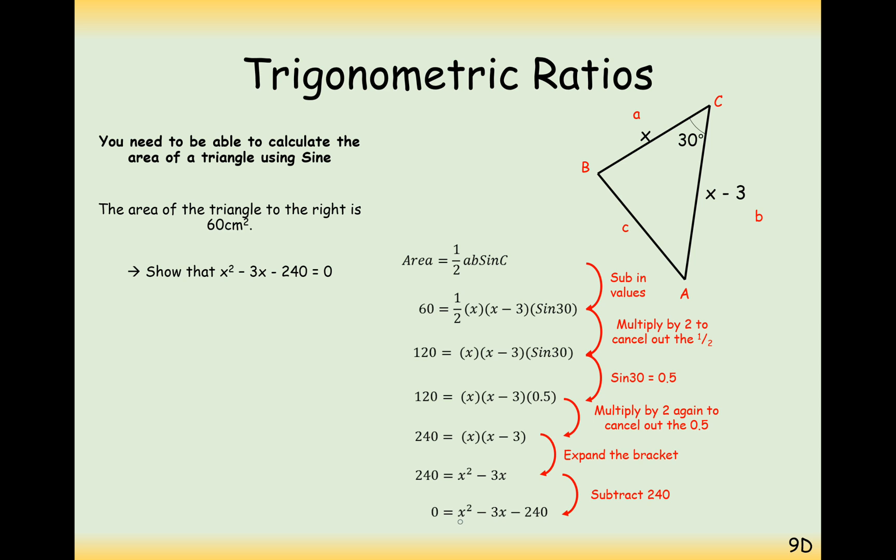And then expand the brackets and simplify. So we get 0 equals x squared minus 3x minus 240. So we can sometimes substitute algebra into this formula here and give an answer as the area as well.